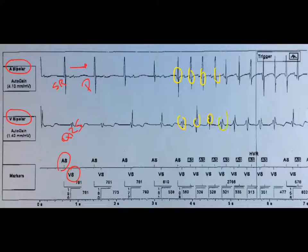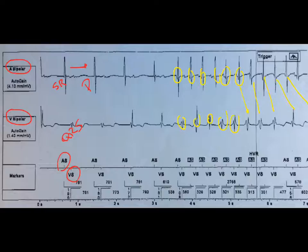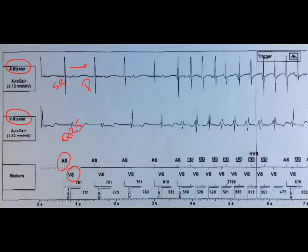One A, one V; one A, one V; one A, one V; one A, one V. And then this A maybe drops, so we have more A's than V's — and that makes the diagnosis of atrial tachycardia, supraventricular tachycardia, way more likely than VT.